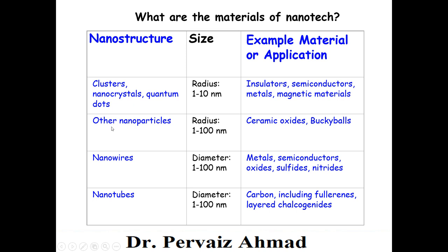We also have other nanostructures that we call nanoparticles. Nanoparticles have a typical radius from 1 to 100 nanometers, and they can be ceramic oxide and buckyballs. Nanowires have diameters from 1 to 100 nanometers and can be metals, semiconductors, oxide, sulfide, and nitride — semiconductors like boron nitride and some other materials.